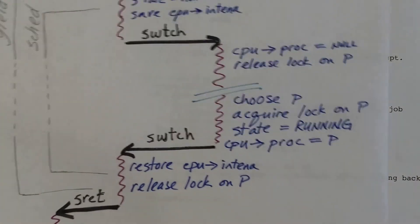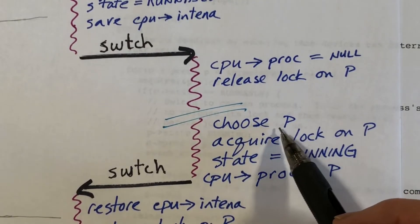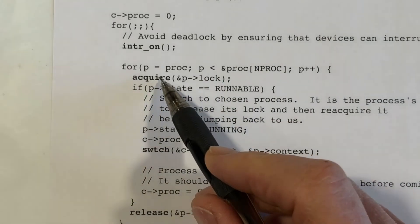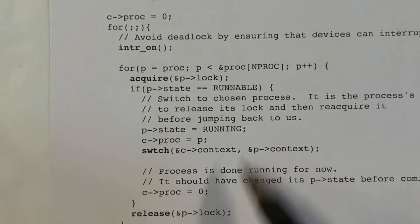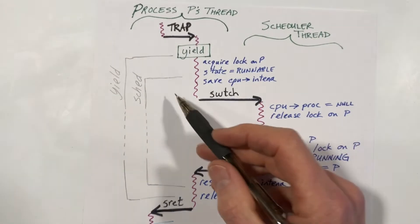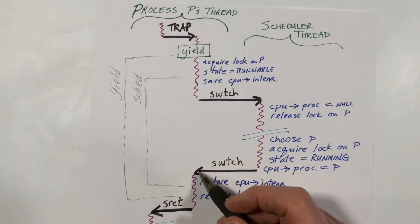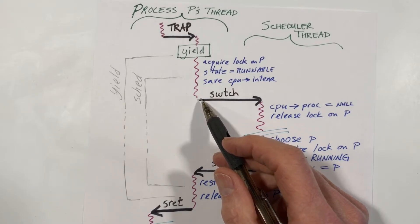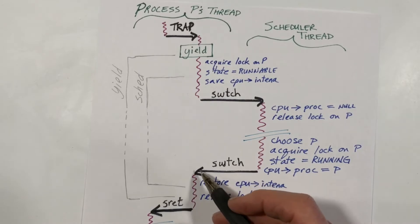The switch function is called in exactly two places: in the SCED function to go into the scheduler, and in the scheduler function to go back into some process. Whenever it's called in SCED, it is always switching from a process to the scheduler thread. And when it's called in the scheduler thread, it's always going from the scheduler thread into a process.